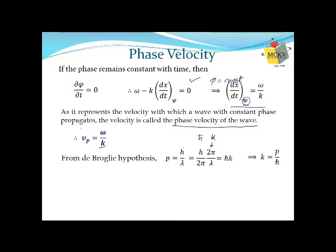ħ is constant because it is derived from Planck's constant h. So instead of k, we can replace it with momentum. Momentum — the product of mass and velocity of a particle in motion — can be visualized easily. So we can replace k by p/ħ.